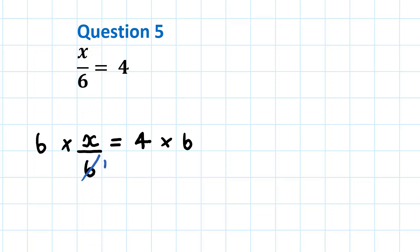Cancelling down. 6 into 6 goes once. We are left with 1x.